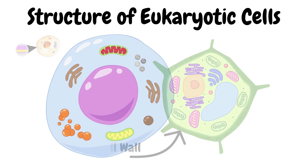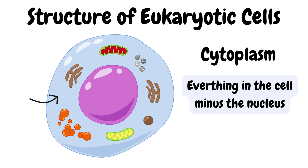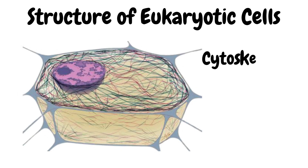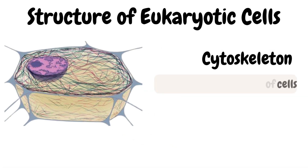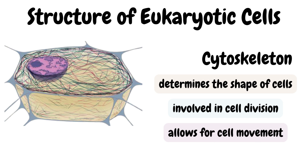In the internal cell environment, we can find structures like the cytoplasm and the cytoskeleton. The cytoplasm is all the material within the cell excluding the nucleus. It is comprised of the cytosol, which is a jelly-like fluid made mostly of water, and organelles suspended within it. The cytoplasm is the site of most of the cell's chemical reactions. The cytoskeleton provides shape and organization in the cell. It is a dynamic network of long protein fibers that determines cell shape, is involved in cell division, allows for cell movement, and provides a track-like system for moving organelles within the cell.